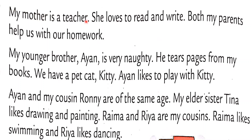My mother is a teacher. She loves to read and write. Both my parents help us with our homework. My younger brother Ayan is very naughty. He tears pages from my books. We have a pet cat, Kitty. Ayan likes to play with Kitty. Ayan and my cousin Ronnie are of the same age. My elder sister Tina likes drawing and painting. Raima and Ria are my cousins — Raima likes swimming and Ria likes dancing. Here she is telling about her family members, their likes and dislikes.